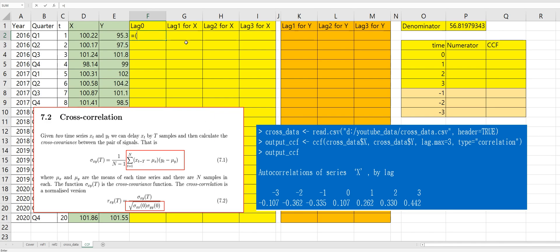X minus average of X variable times Y variable minus average of Y variable. We can apply this formula for other cells. And let's get sum of lag 0.